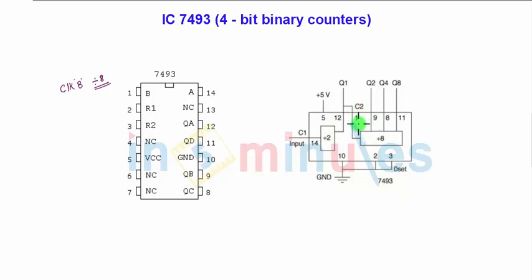Pin number 1 you can name as B. Pin numbers 2 and 3 are R1 and R2, which are the reset inputs to reset to 0. Pin numbers 4, 6, and 7 are not connected. Pin number 5 is plus 5 volt DC supply to activate the IC, while pin numbers 4, 6, and 7 are not connected.